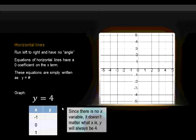Since there's no x variable, it doesn't matter what x is. Y will always be equal to four. So if I want negative one, y is going to be four. If I want to plug in zero, y is four. If I want to plug in one, and guess what? Y is still four. It doesn't matter. It's always going to be four.